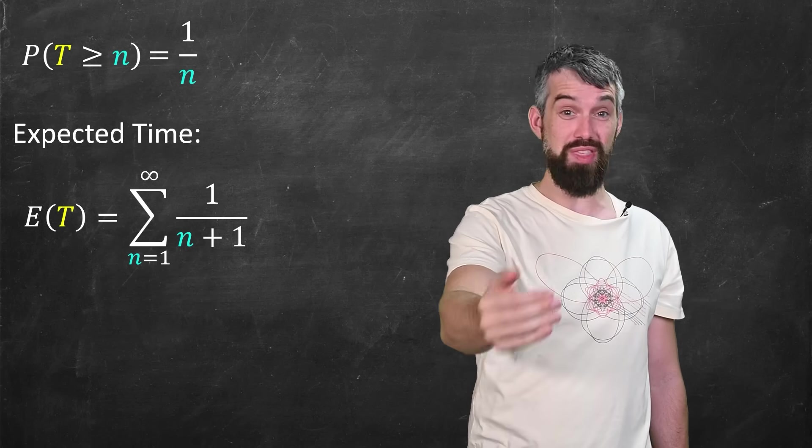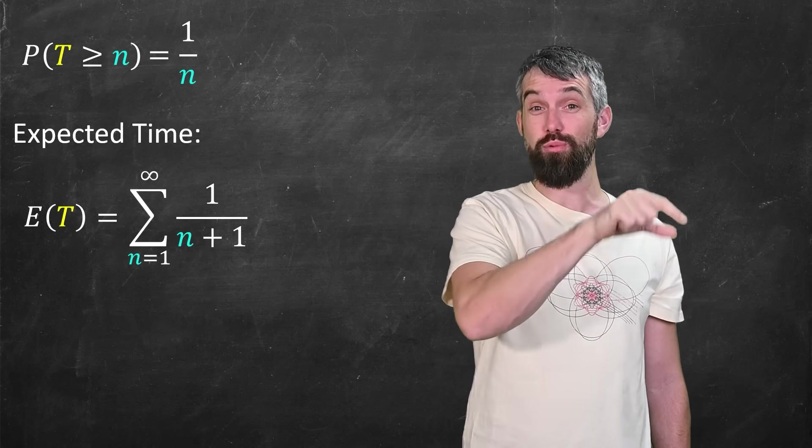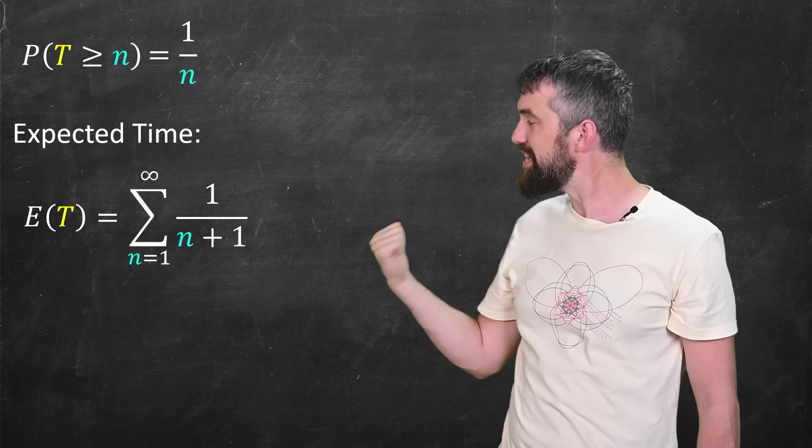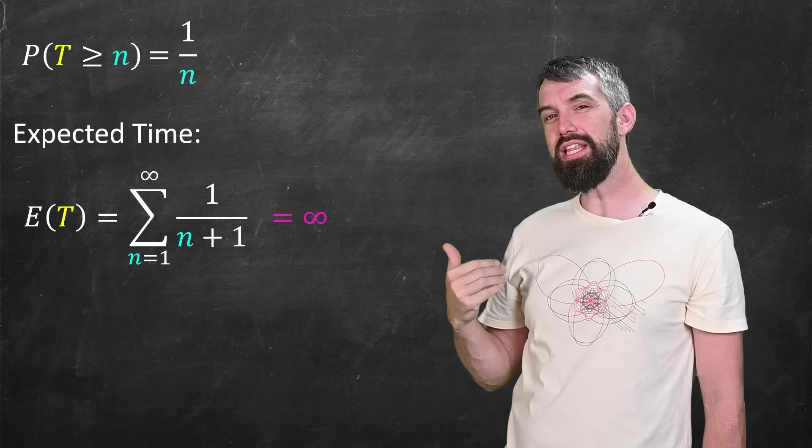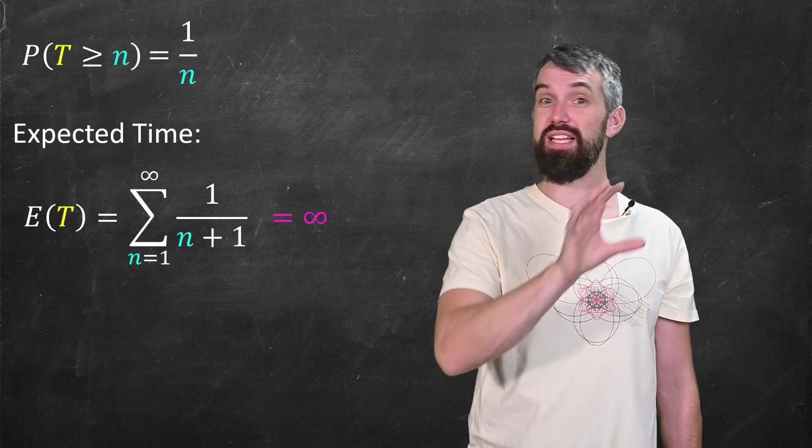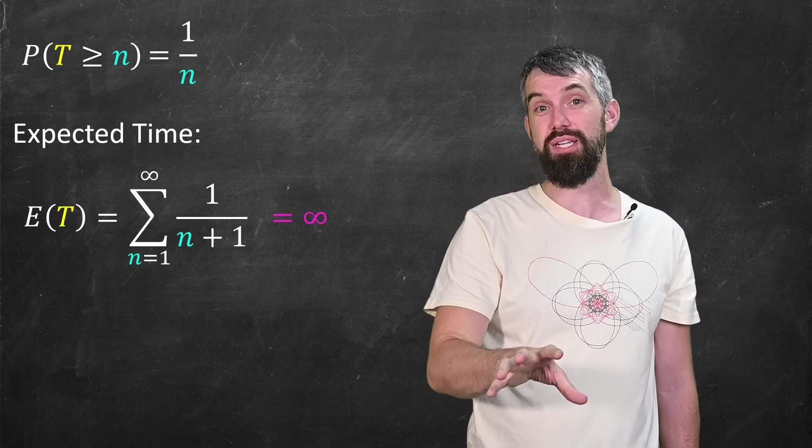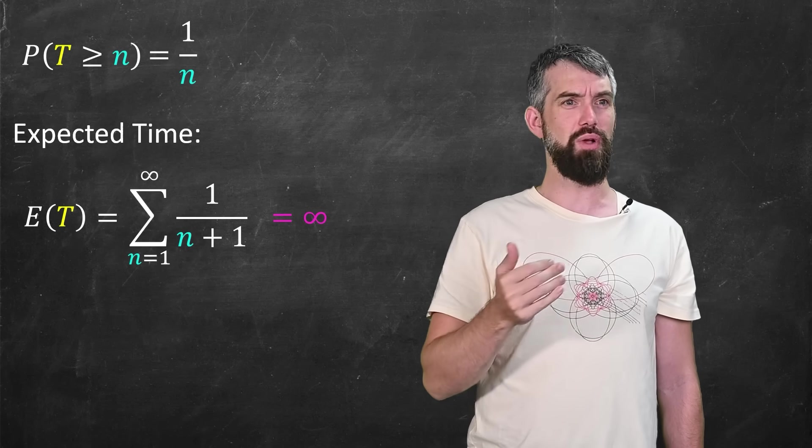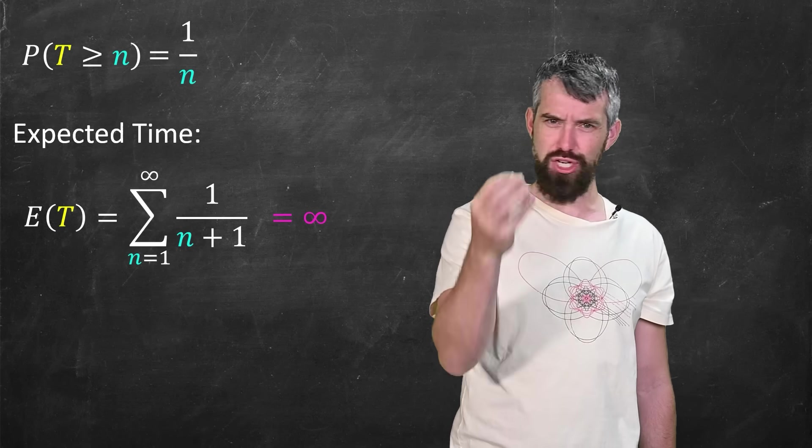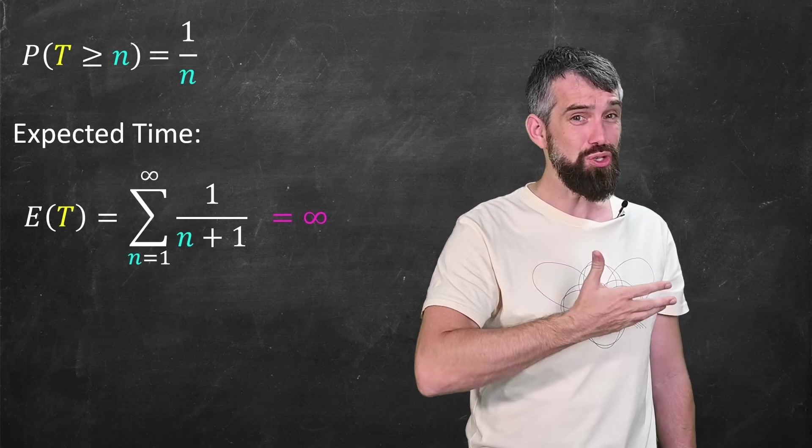That expected time, the length of time you have to wait for a red ball to be chosen, this sum actually diverges to infinity. It's a famous sum called the harmonic series and it diverges to infinity. So the expected wait time to get a red ball is actually infinite.